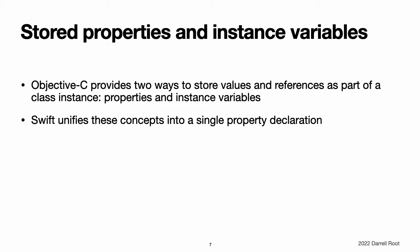This approach avoids confusion about how the value is accessed in different contexts and simplifies the property's declaration into a single, definitive statement. All information about the property — including its name, type, and memory management characteristics — is defined in a single location as part of the type's definition.